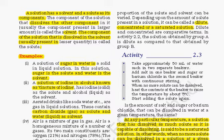A solution has two components: solvent and solute. The component which dissolves the other is known as the solvent, and the component which gets dissolved is called the solute. In a mixture of water and salt, salt is the solute and water is the solvent. In sugar and water, sugar is the solute and water is the solvent. A solution of iodine in alcohol is known as tincture of iodine — here iodine is the solute and alcohol is the solvent. In aerated drinks like Thums Up or Coca-Cola, carbon dioxide gas is the solute and water is the solvent.